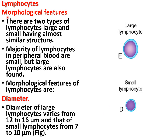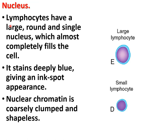There are two types of lymphocytes: large lymphocytes and small lymphocytes. The majority of lymphocytes in peripheral blood are small, but large lymphocytes are also found. The diameter of large lymphocytes varies from 12 to 16 micrometers, and small lymphocytes from about 7 to 10 micrometers — nearly equal to RBC size. Lymphocytes have a large, round, single nucleus that almost completely fills the cell, staining deeply blue, giving an ink-spot appearance.